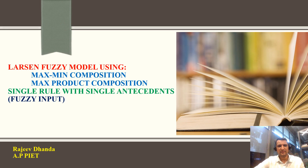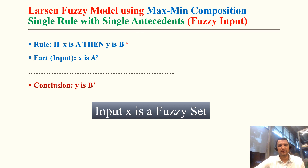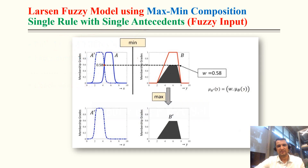For single rule with single antecedent: if X is A, there is only one rule with a single antecedent, and the output is Y is B. We want to calculate output for input A-dash, which gives output B-dash. There is a basic difference between Mamdani and Larsen which I will now show with the same numerical values.